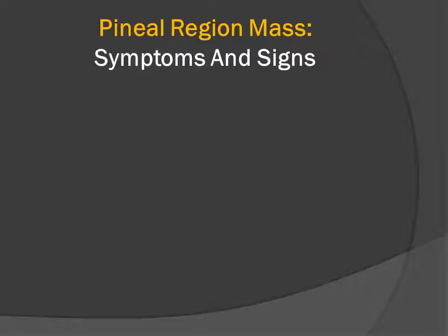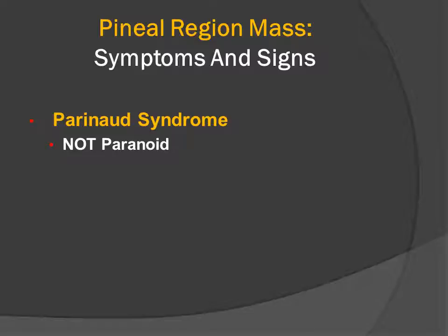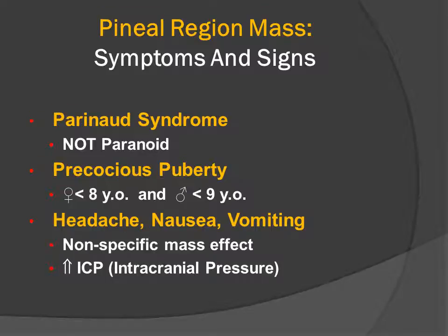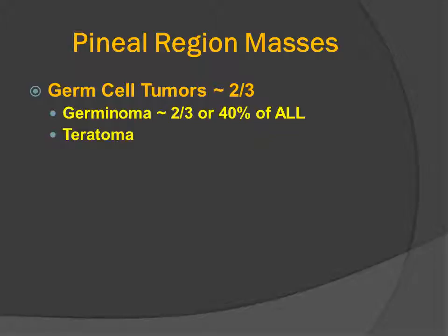Symptoms and signs related to the pineal region can be anatomically localized as Parinaud syndrome, related to pressure on the tectal plate. Patients may have interruption of the normal physiology between the hypothalamus and the pineal and present with precocious puberty — generally under the age of 8 for American girls and under the age of 9 for American boys. Patients may also have nonspecific signs and symptoms from increased intracranial pressure, such as headache, nausea, and vomiting. The vast majority of pineal region masses are germ cell tumors, thought to arise from rests of multi-potential germ cells in the quadrigeminal plate cistern surrounding the pineal gland.